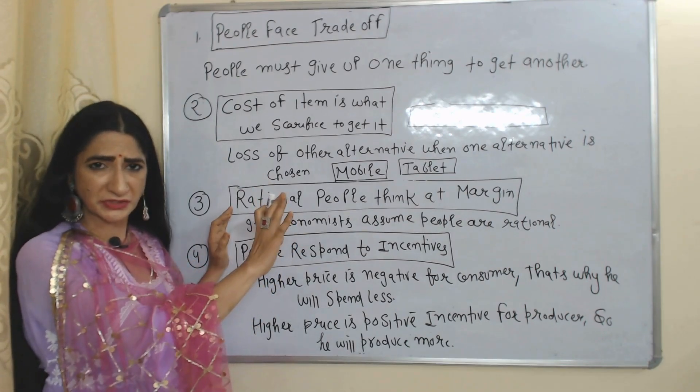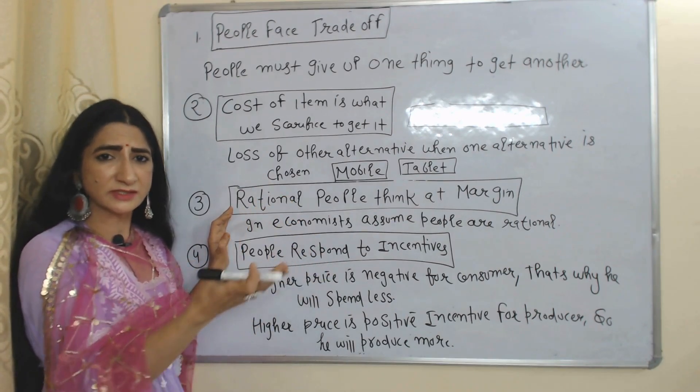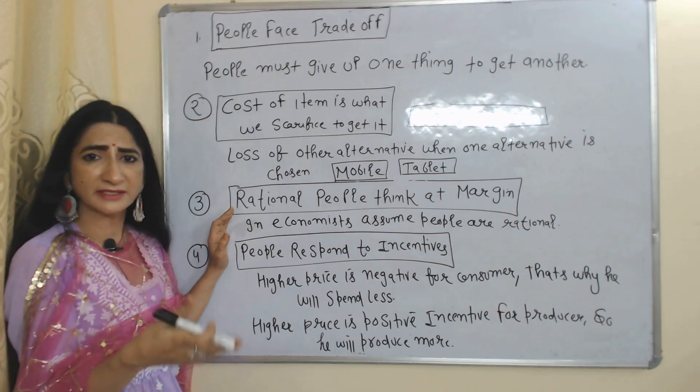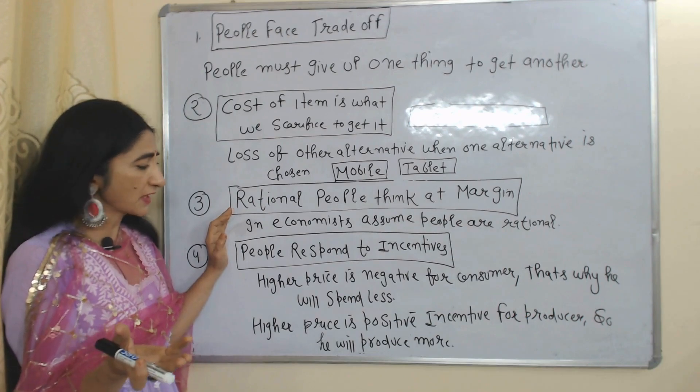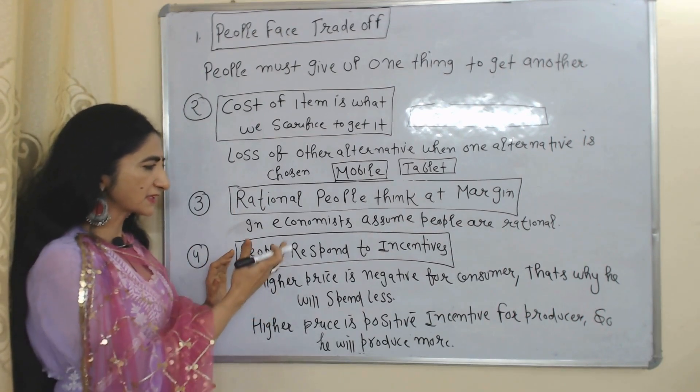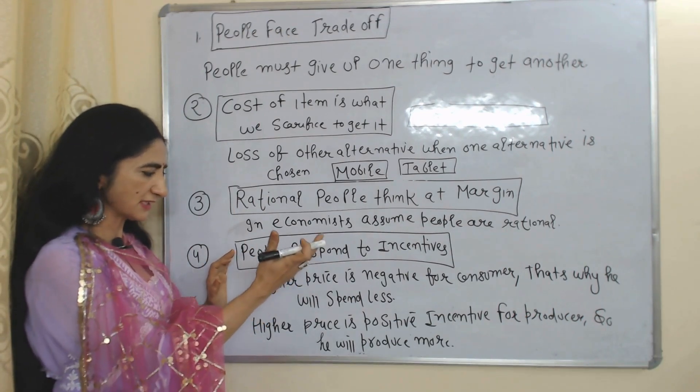The next principle is rational people think at the margin. In economics, whenever economists make any theory, they assume people are rational — meaning they assume people's consumption decisions are not influenced by their emotions.